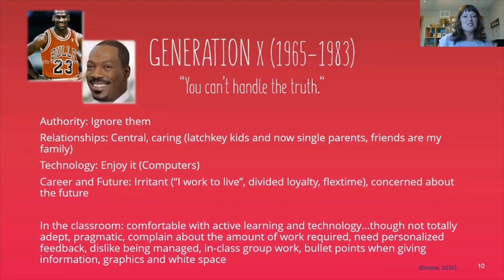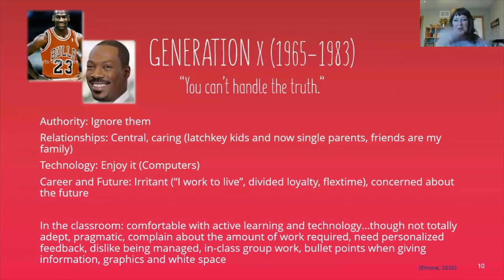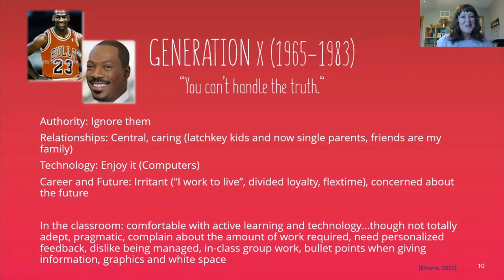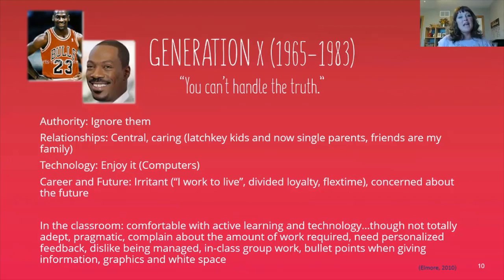Generation X is also sometimes called the first generation of 'evil children' movies — Rosemary's Baby, The Exorcist, Children of the Corn, Gremlins, Child's Play, The Omen, The Shining — these kinds of movies came out during this time. Not that these adults were evil as children, but these kinds of cultural experiences may have shaped the way they saw their reality and what they might need in the classroom.